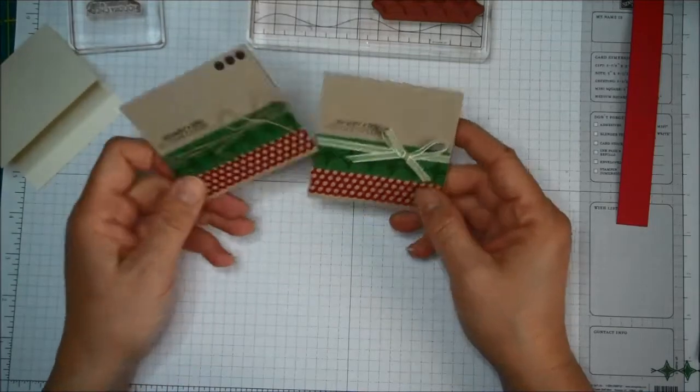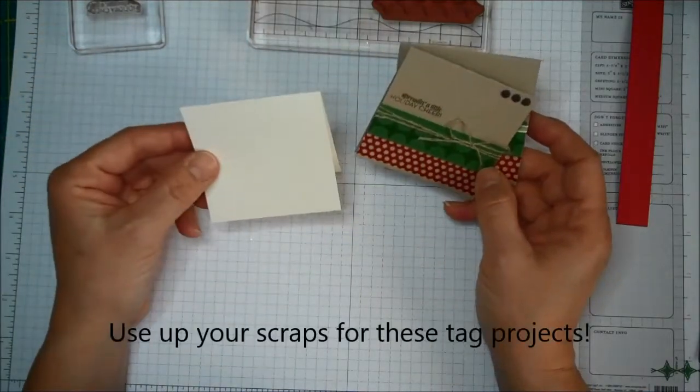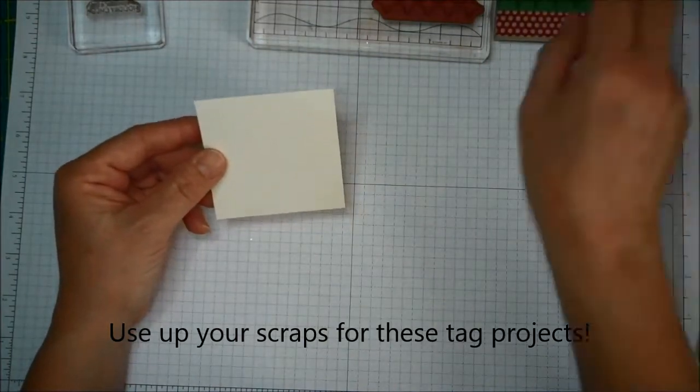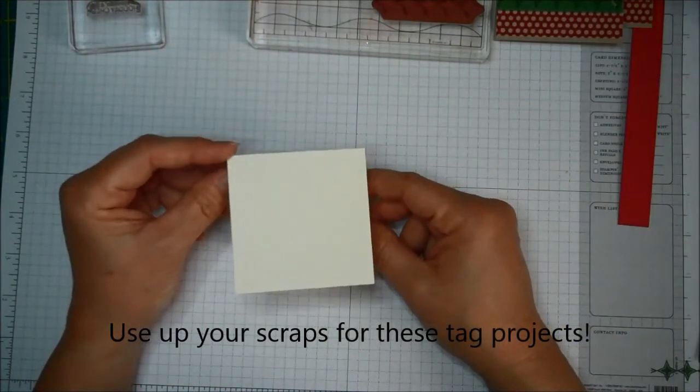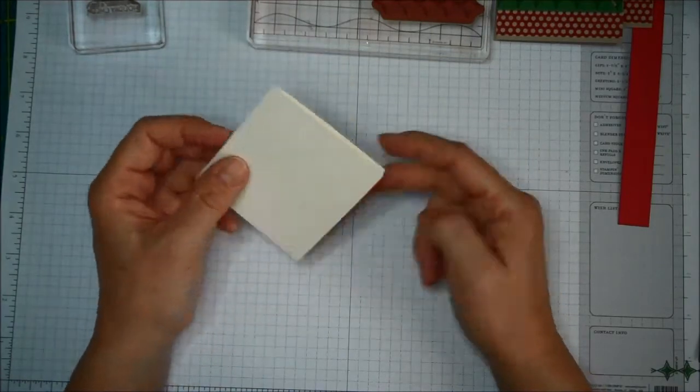So I'm going to do a similar technique on a piece of Very Vanilla. I'm just using scraps of paper that I have in my folders, in my scrap folders. This is cut 3 by 6. It's scored at 3 inches.